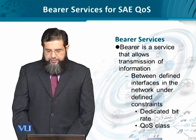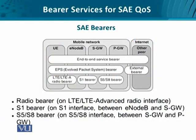There is a certain quality of service class that needs to be implemented. Let us look at the overall network architecture and different bearers incorporated in the system architecture evolution. You can see we have the network elements starting from the user equipment on the customer premises side, then the eNodeB, the serving gateway, the packet data network gateway, and the external internet. The interface between the user equipment and eNodeB uses a radio bearer known as the LTE and LTE-A radio bearer, also known as the RAN — radio access network — bearer. Between the eNodeB and the serving gateway, we have the S1 bearer.